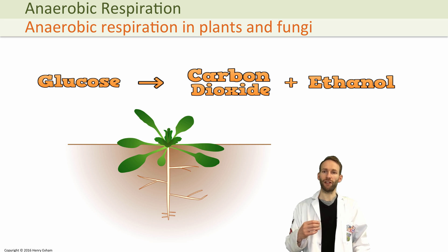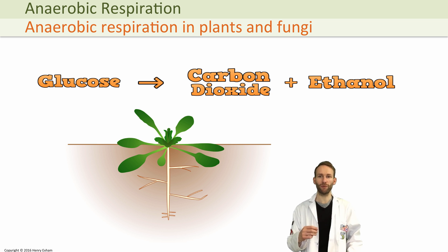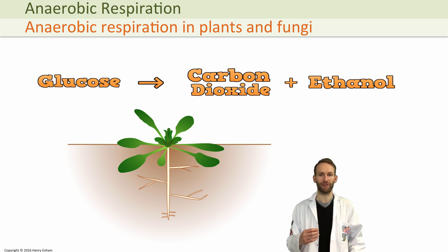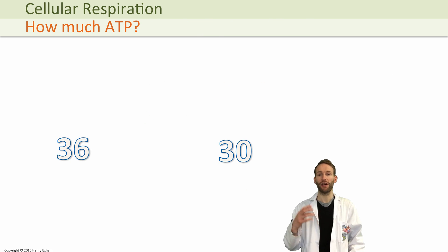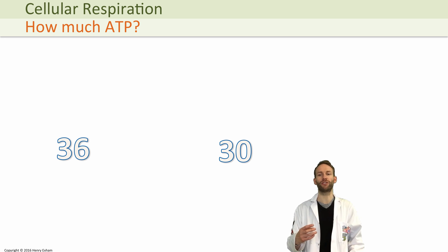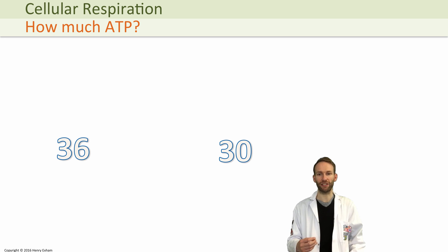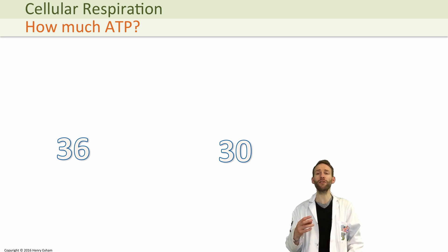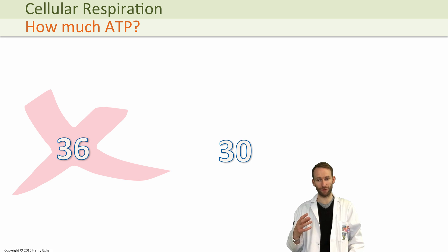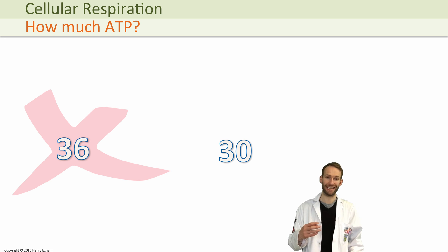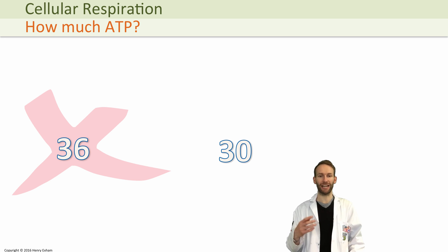That's the end of the videos on respiration, but it's important to mention ATP yield and the comparisons between aerobic and anaerobic respiration. It was thought for a long time that 36 or even 38 ATP were produced in aerobic respiration. However, with more up-to-date research this was actually wrong. It is now thought that 2 NADHs yields about 5 ATPs and 2 FADH2s yields 3 ATPs, meaning aerobic respiration would actually yield around 31 ATP.